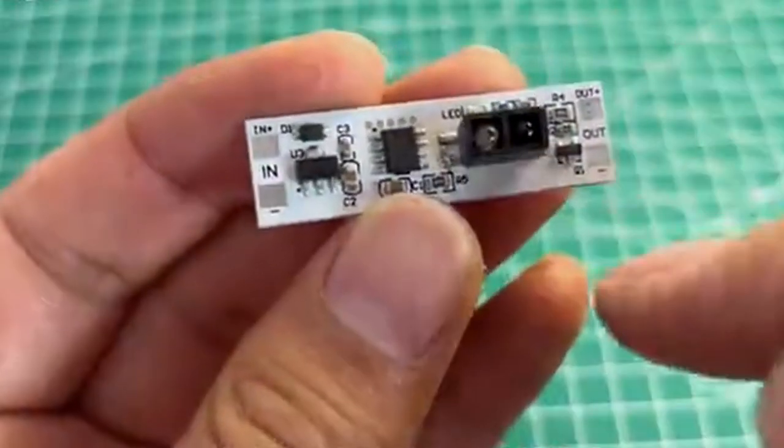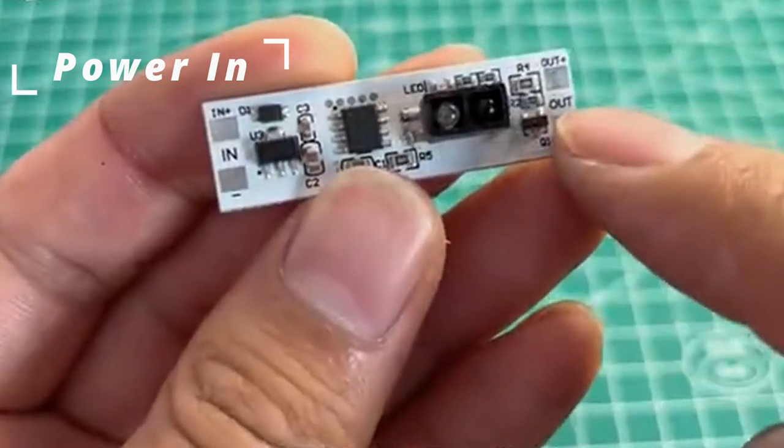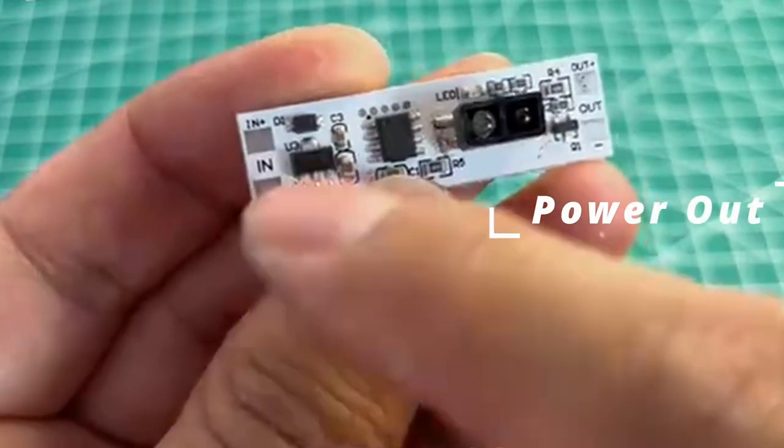This is the hand sweep motion sensor switch. On the left side, where it indicates, is the power in, and the right side out is the power out.